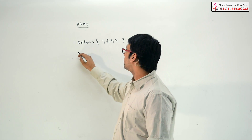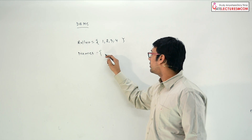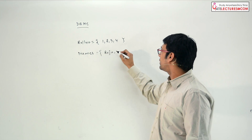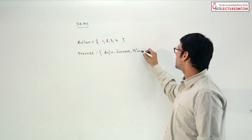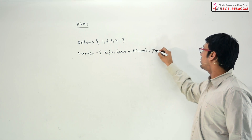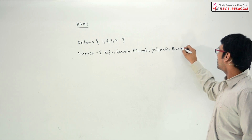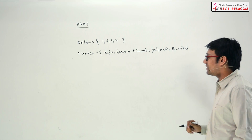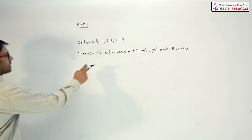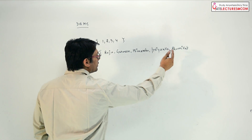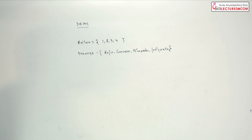And there is a set which is the set of names. The set of names may have the name Raju, we have a name Gurveen, we have a name Himanshu, we have a name Priyanka, and we have a name Bhumika. So we have these names — for simplicity, let us assume only 4 elements are there.